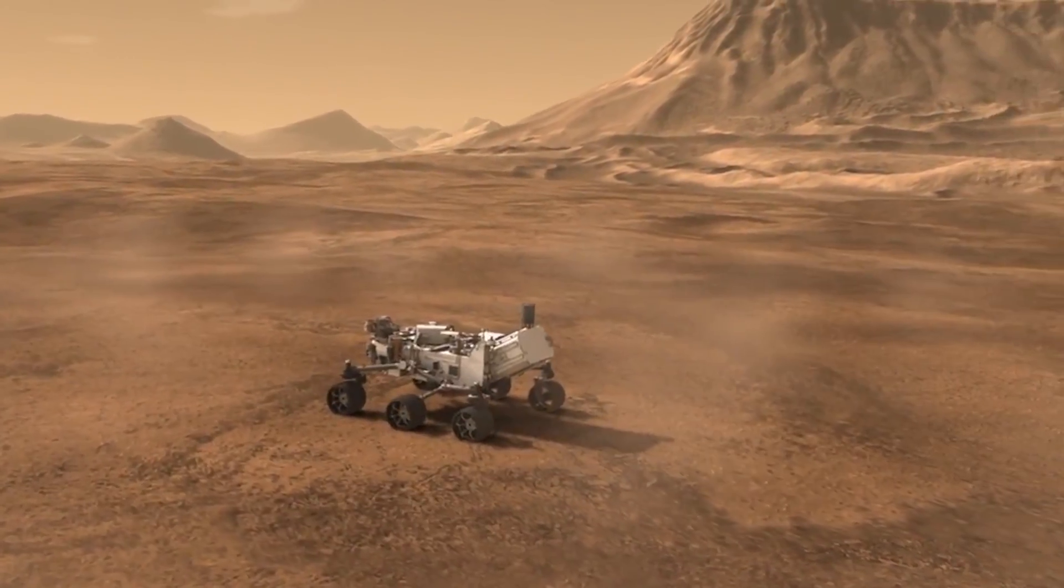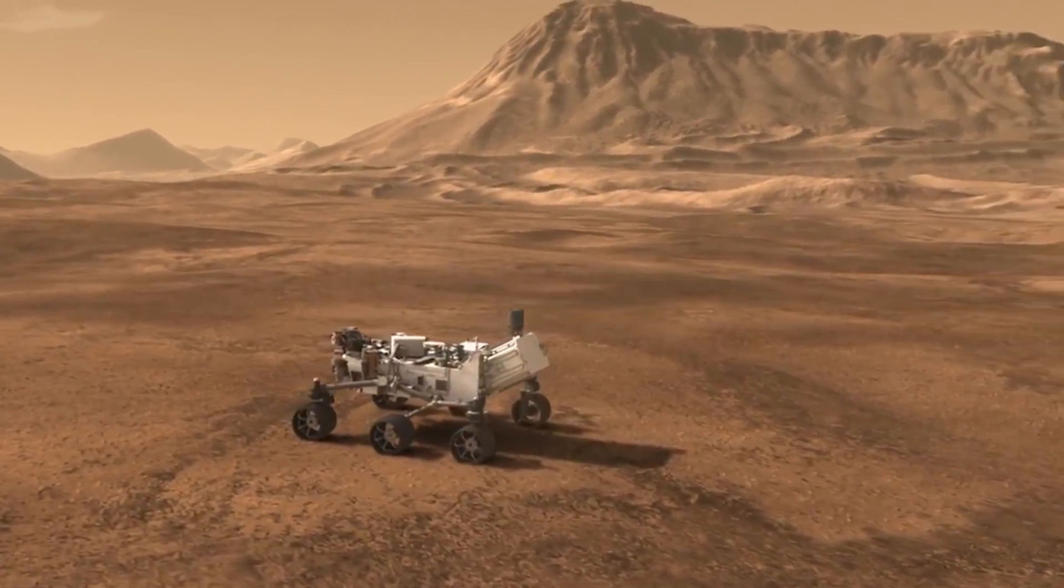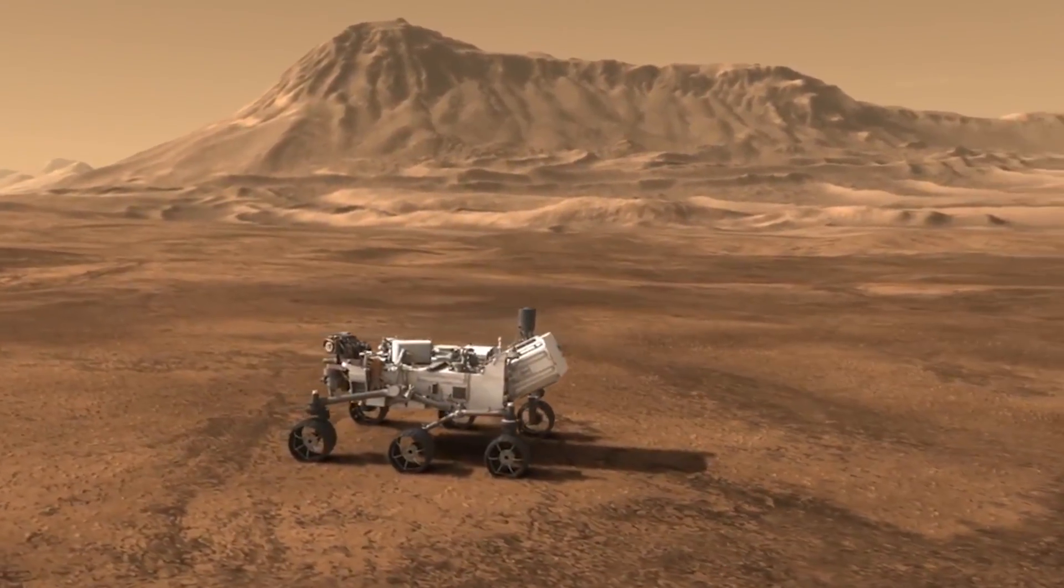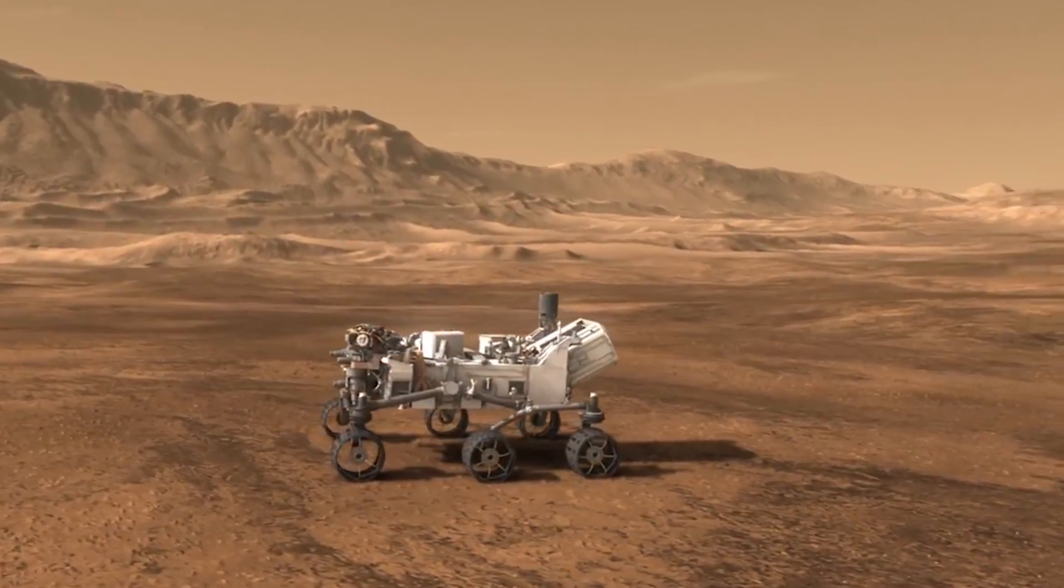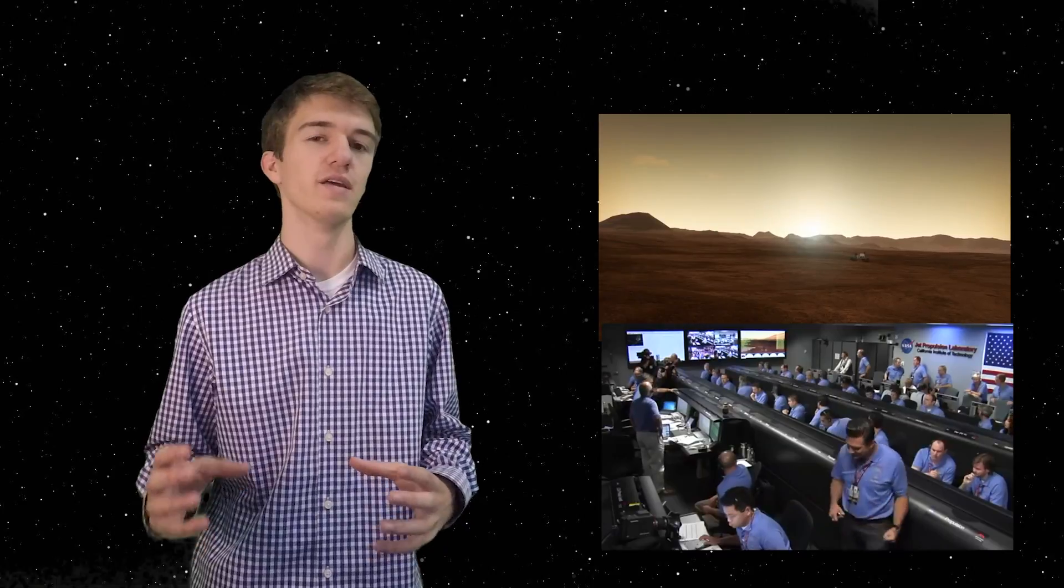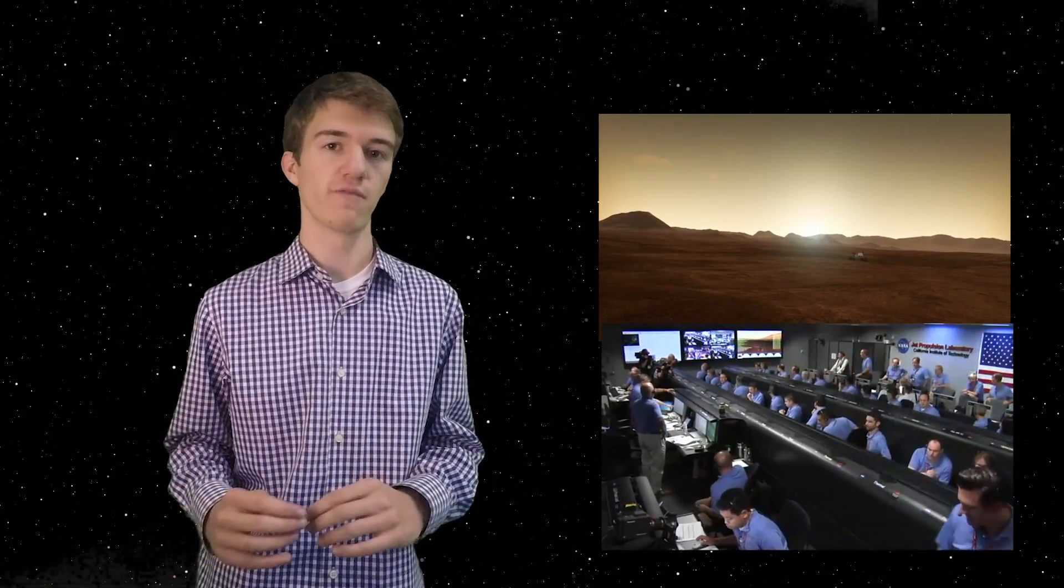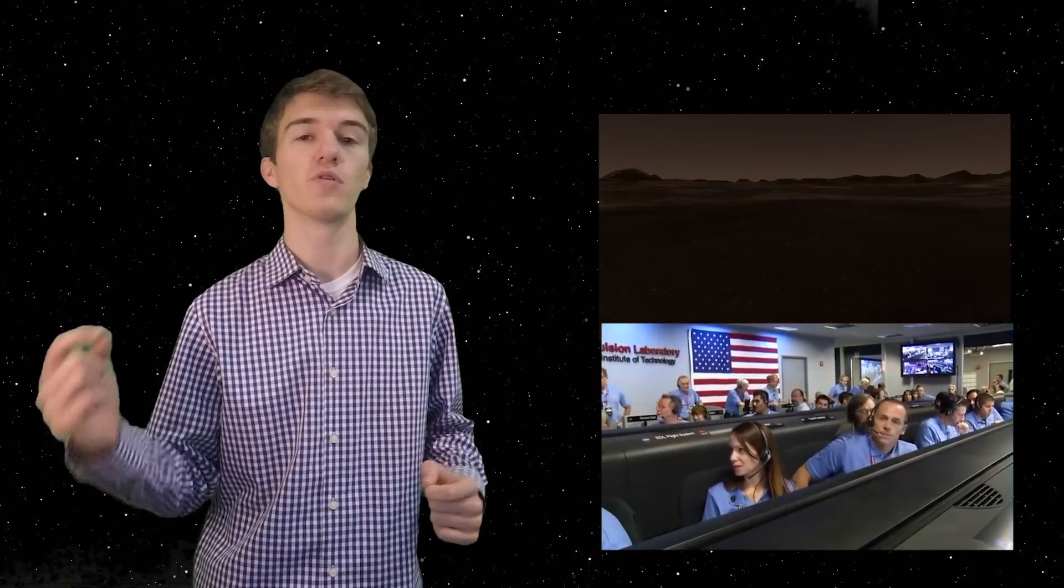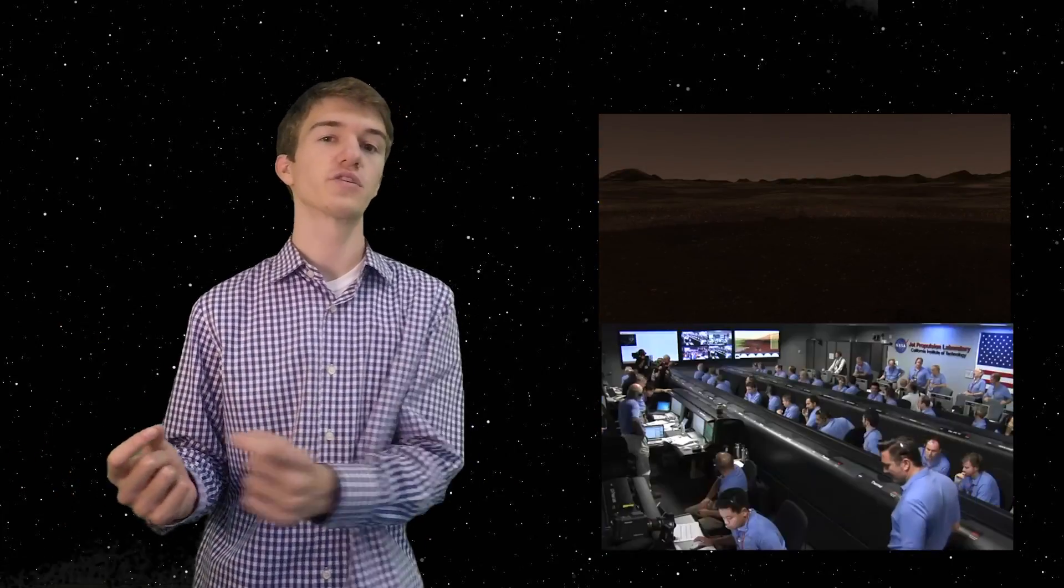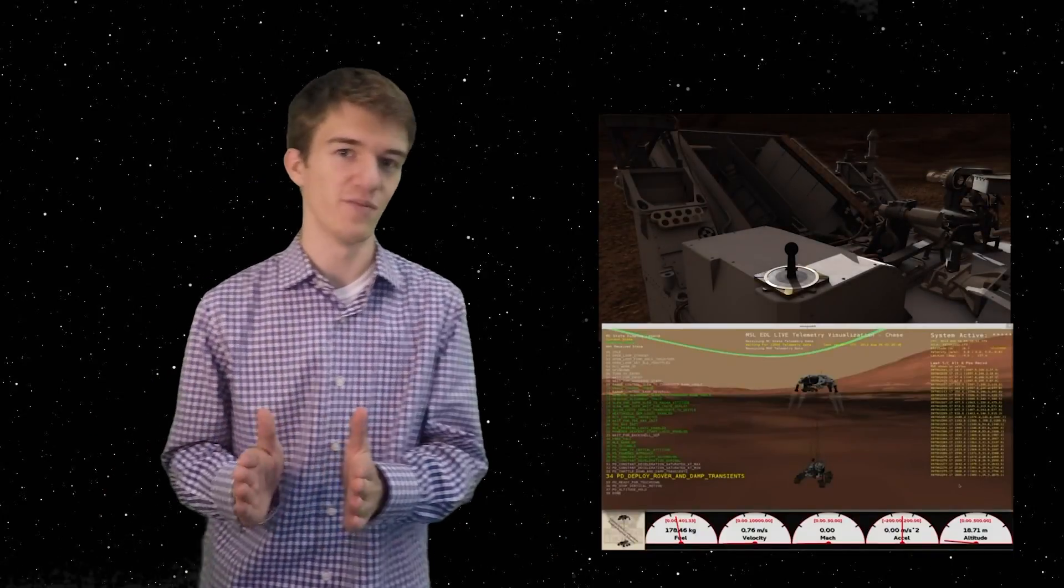What was even more phenomenal about the landing sequence wasn't the sky crane or the heat shield or the supersonic parachute, but the fact that all of that had to go by itself. At the time it landed, Mars was seven light minutes away from Earth, meaning that any communication from the rover or satellites nearby took seven minutes to get back to Earth.